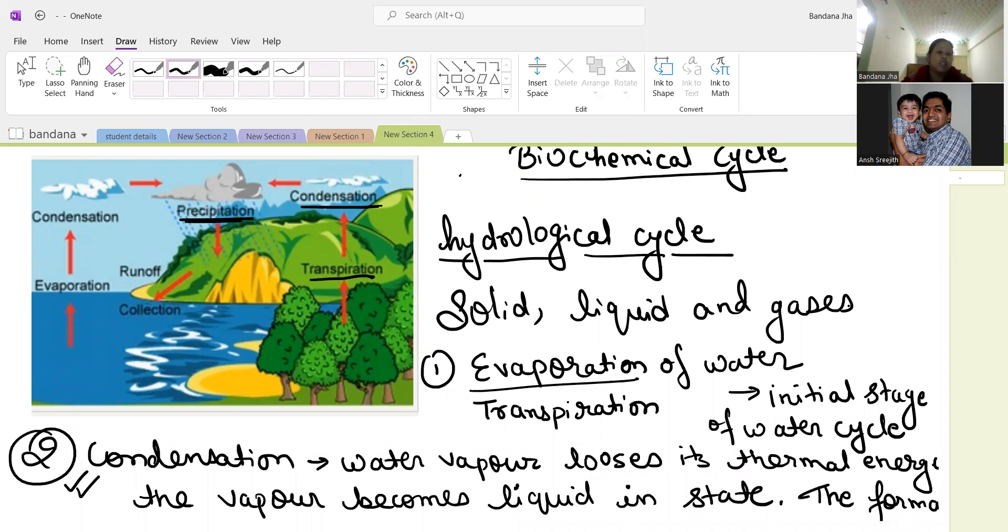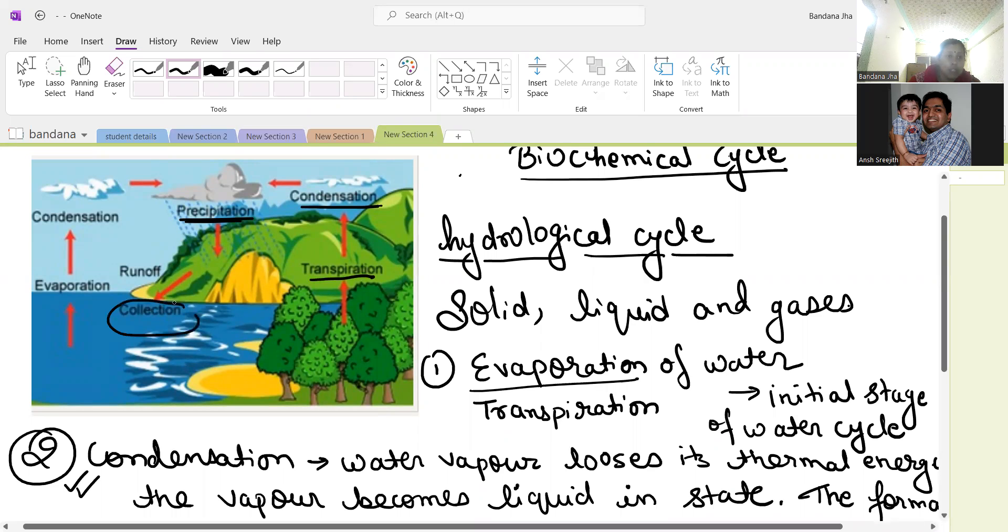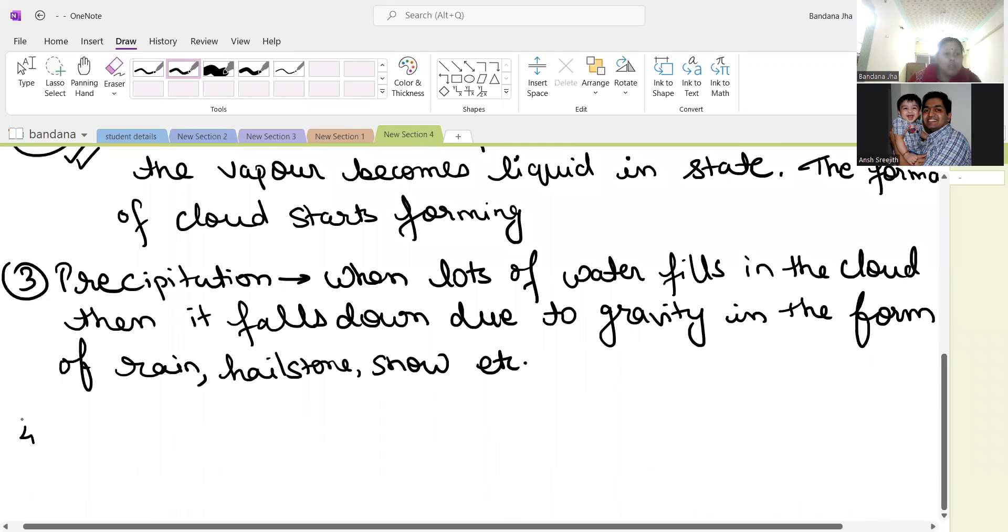After precipitation, the water is finally collected somewhere. Water is finally depositing somewhere - maybe in the form of underground water, sea, river, ponds, well, anywhere they are depositing. The last process is collection or decomposition. Either you can say it as collection, either you can say it as decomposition - doesn't matter.